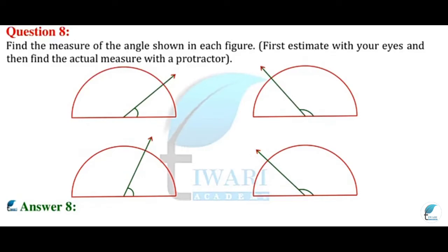We have to find the measurement of angles on each figure. First, estimate with your eyes and find them — acute angles — then measure with the protractor. We have to estimate, and this is what we can see. Here we are completely 90 degrees, and here we are 60 degrees. 60 is half of it. This is completely a 30 degree angle, and if you measure it, you will get 30 degrees.